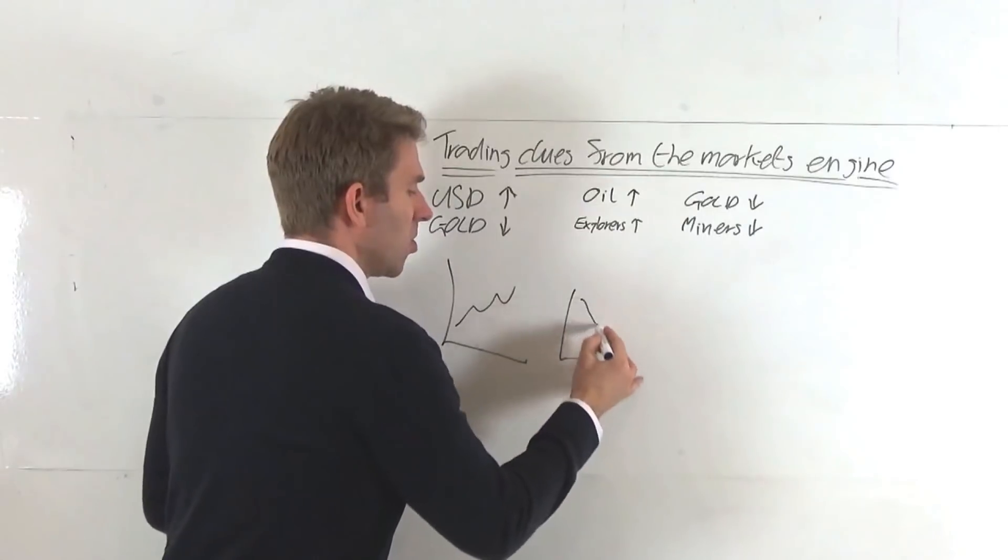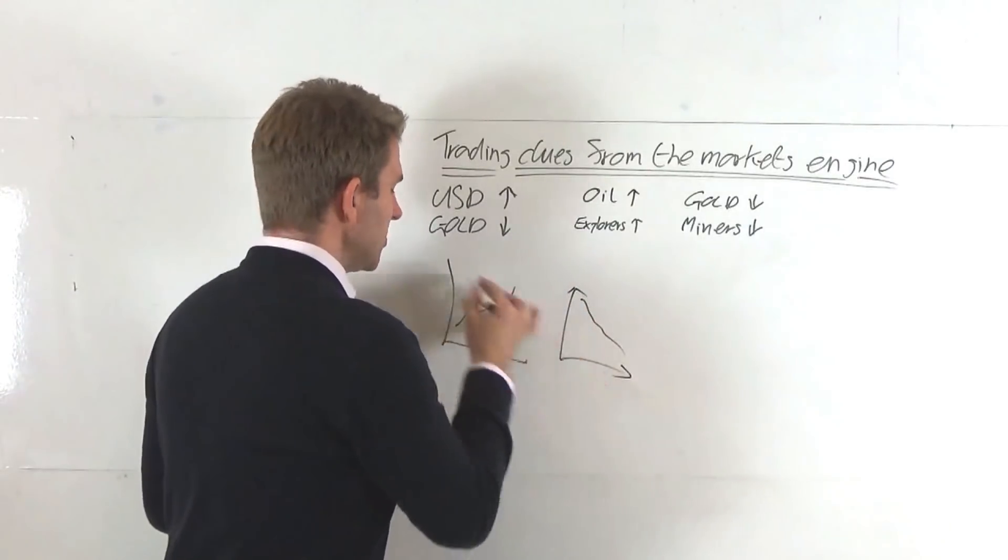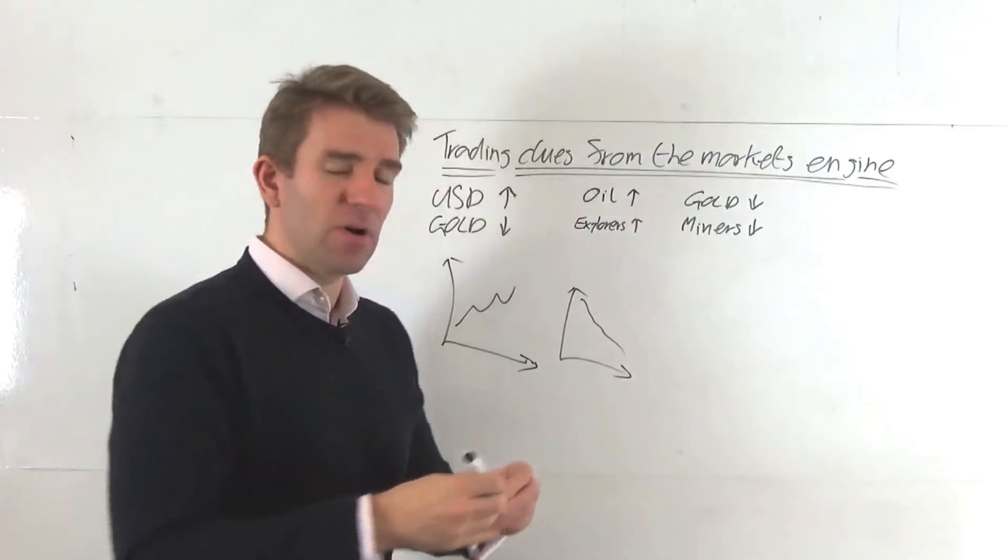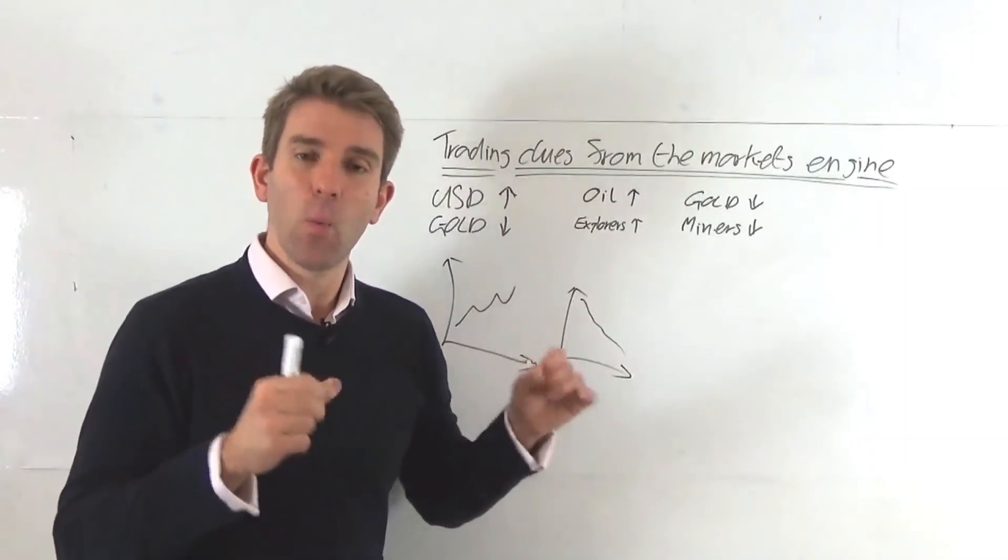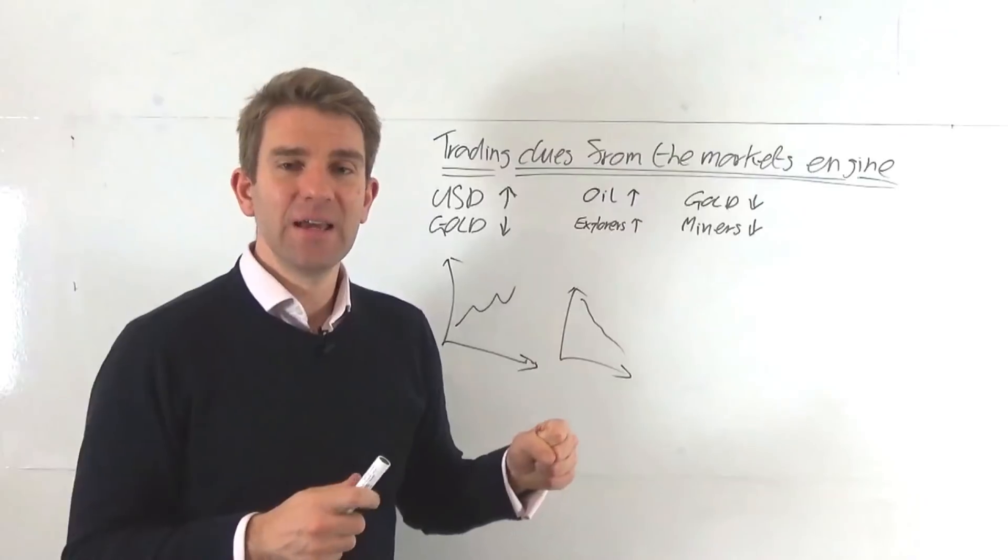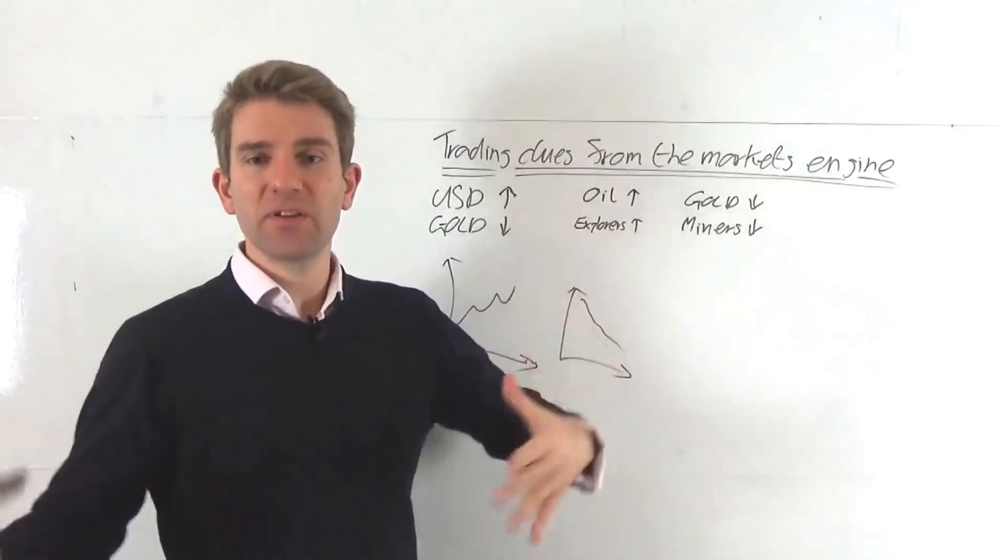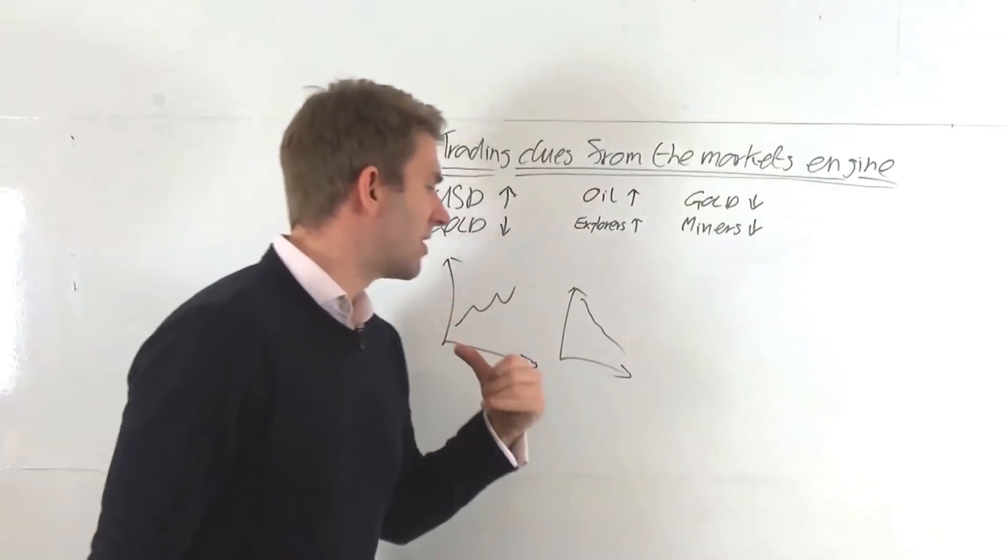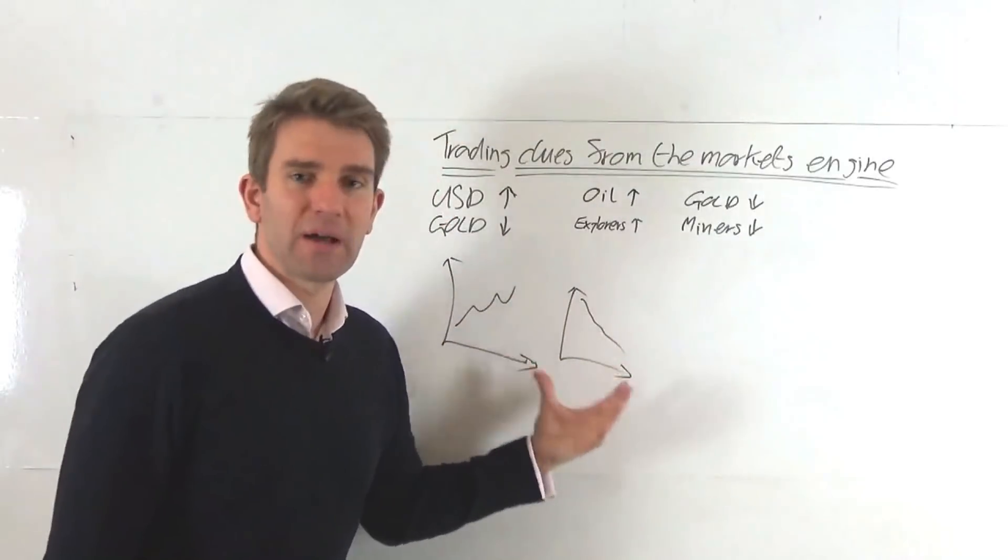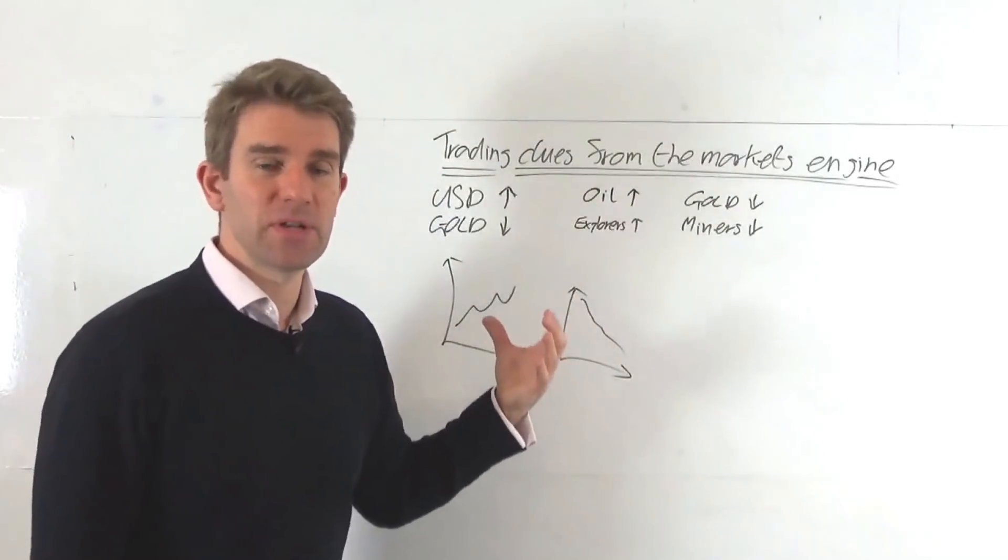So this is what we're talking about in this video, guys, is the trading clues from that and whether we should be trading the primary engine. For example, something has come out and USD is strengthening and gold is weakening off the back of that. Let's just assume that relationship is happening.